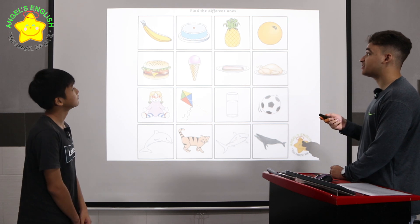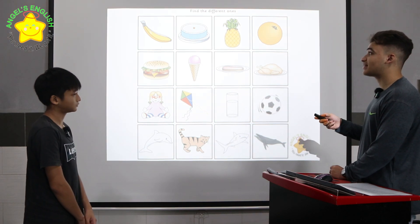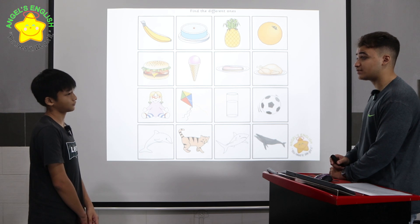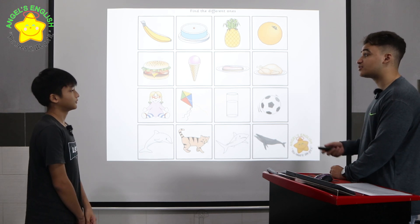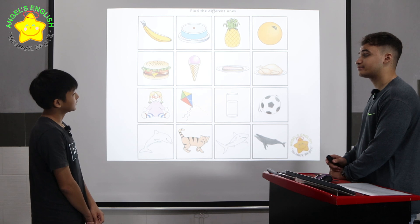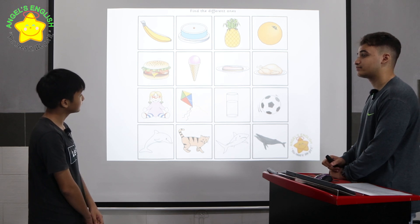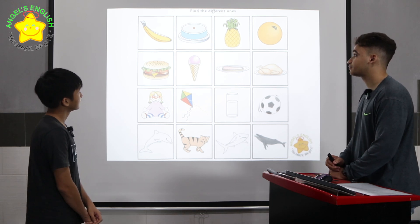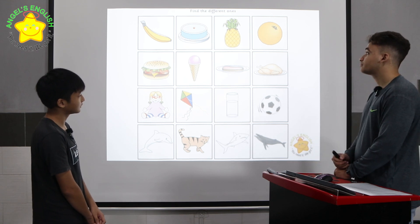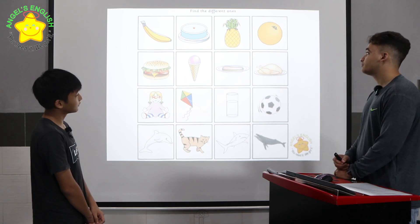This is called find the different ones. In row one, the cake is different because the banana, the pineapple and the orange are all fruits. Can you please tell me which ones are different in rows two, three and four? The ice cream is different because the burger, the meat and chicken are all food.